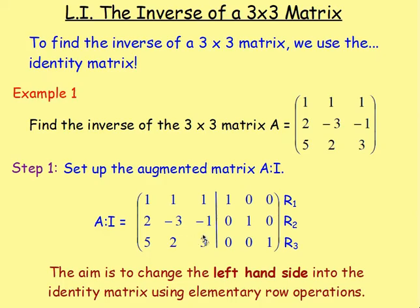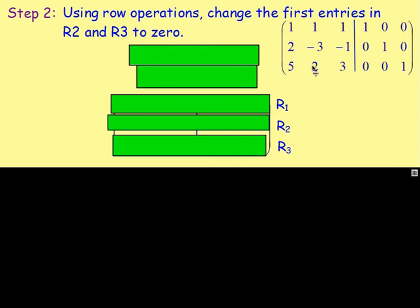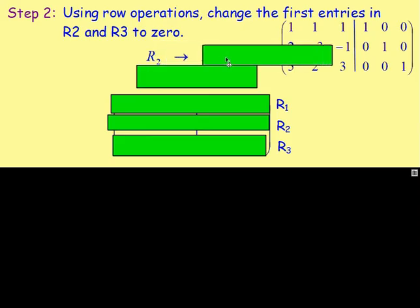So, how is that done? The same as Gaussian elimination — the idea is to change the first two entries in row 2 and row 3 to 0 using row 1. So, let's do that. We want to change the first entries in row 2 and row 3. And to do that, if you do 2 take away 2, that would give you 0. So, row 2 would go to row 2 take away 2 times row 1.